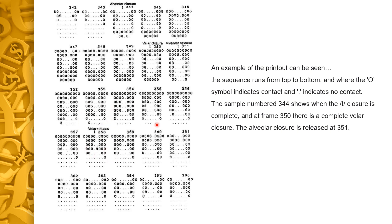The sequence runs from top to bottom. One symbol indicates contact and another symbol indicates no contact. At frame 344, it shows alveolar closure which is complete. Here at frame 350, there is a complete velar closure. The alveolar closure is released at frame 351 — here it is the alveolar release.